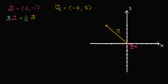Now given these two vectors, what we want to do is evaluate what three times vector u plus one-fifth times vector w is. Three and one-fifth are scalars — they are going to scale these vectors, and we're going to see that happen visually. So we're going to scale up vector u by three, scale down vector w by one-fifth, and then add the resulting vectors.